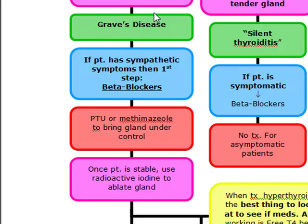In Graves' disease, if they have sympathetic symptoms, the first thing we've got to worry about is the heart. So we have to protect the heart. The first step is going to be beta blockers if they have sympathetic symptoms.